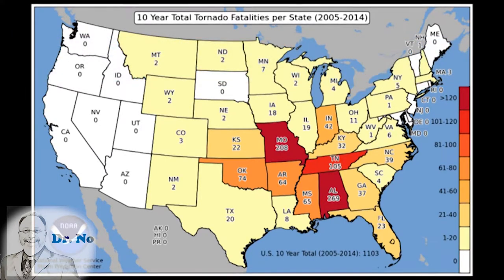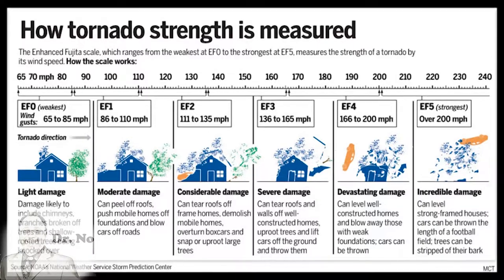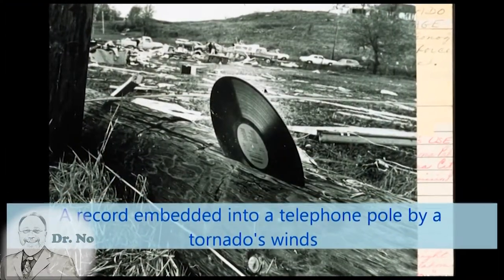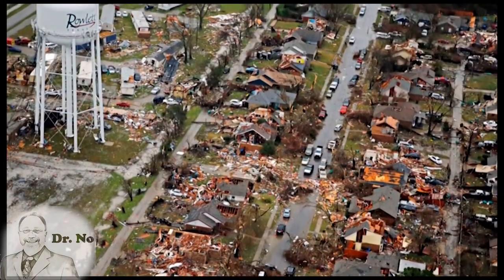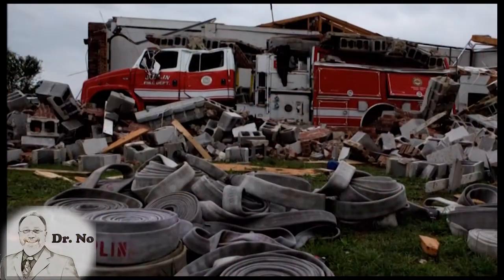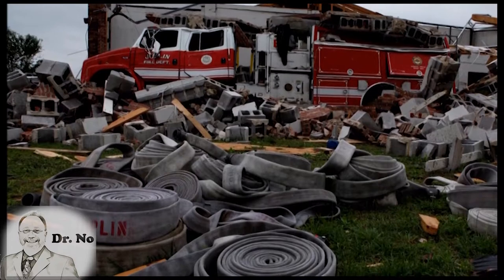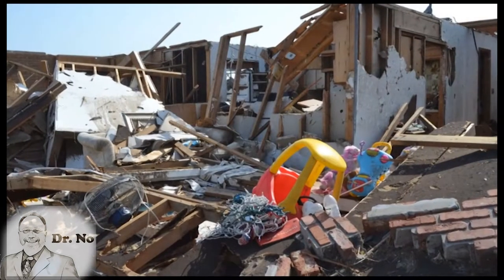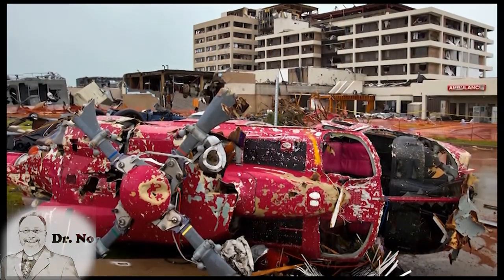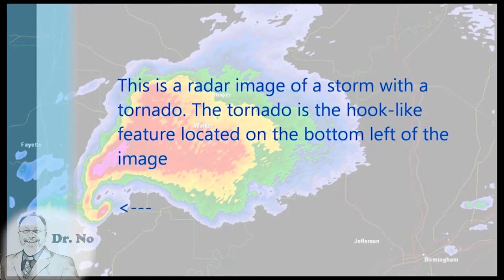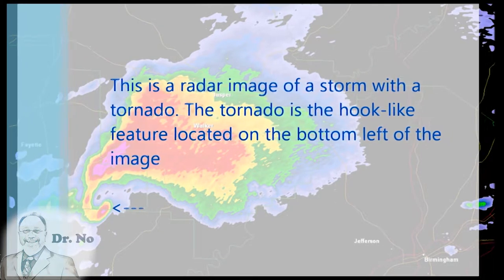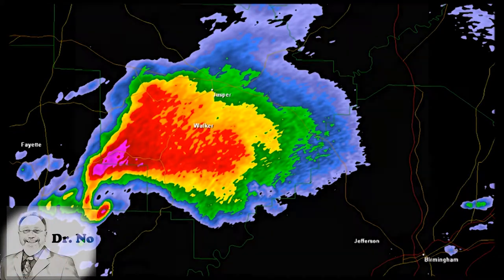Strong and violent tornadoes — those rated F3 or stronger on the EF tornado damage intensity scale — are relatively rare and do not typically occur outside the United States. Although the boundaries of Tornado Alley are debatable depending on criteria used — frequency, intensity, or events per unit area — the region from central Texas northward to northern Iowa and from central Kansas and Nebraska east to western Ohio is often collectively known as Tornado Alley. Meteorologically, this region is ideally situated for the formation of supercell thunderstorms that often produce violent EF2 or greater tornadoes.